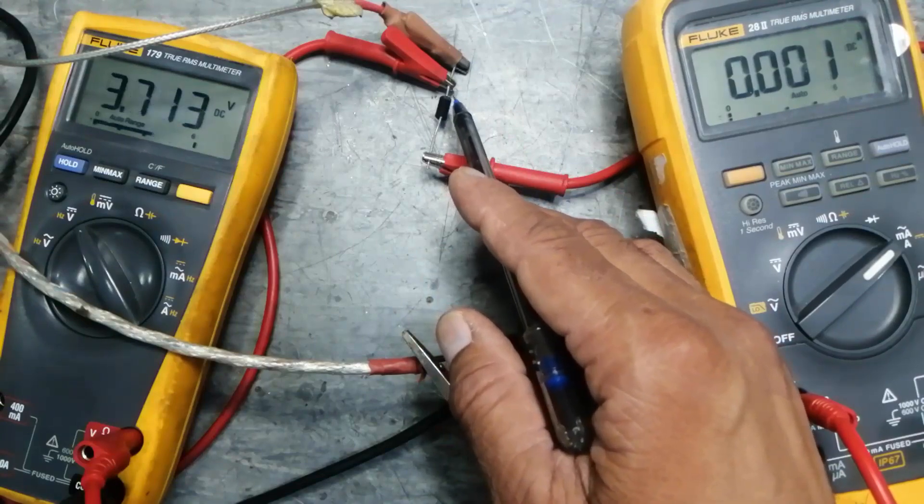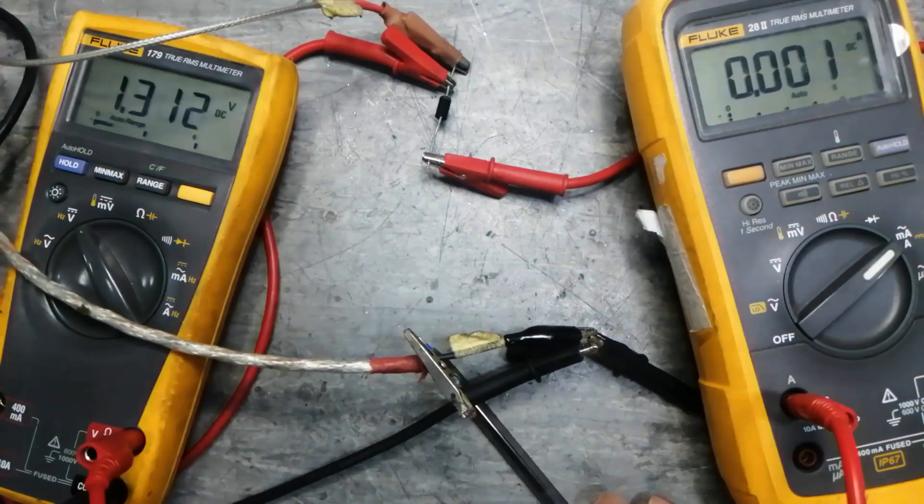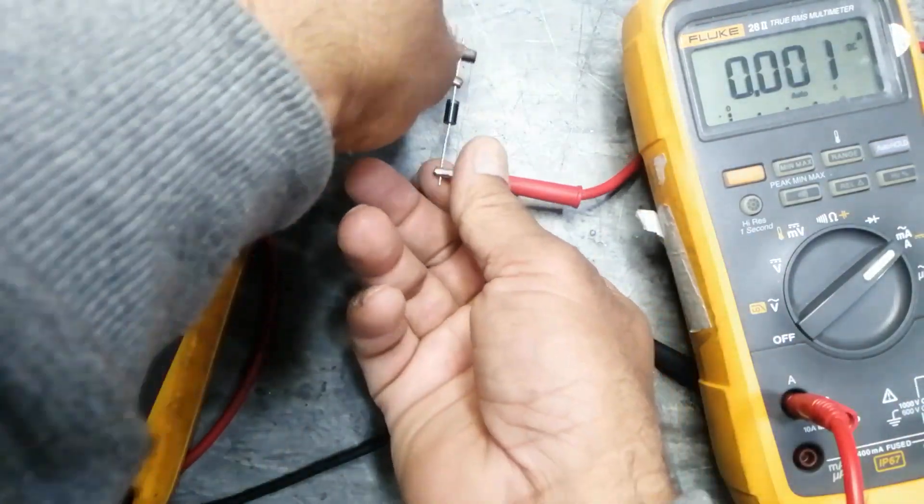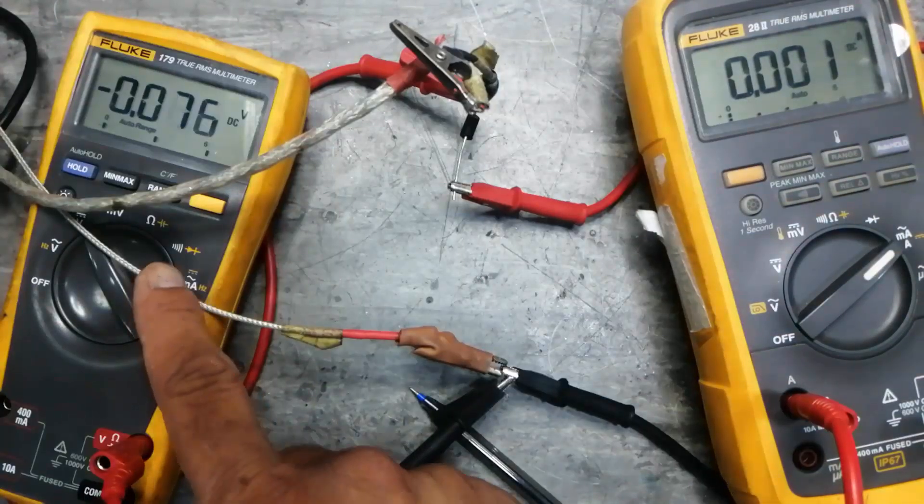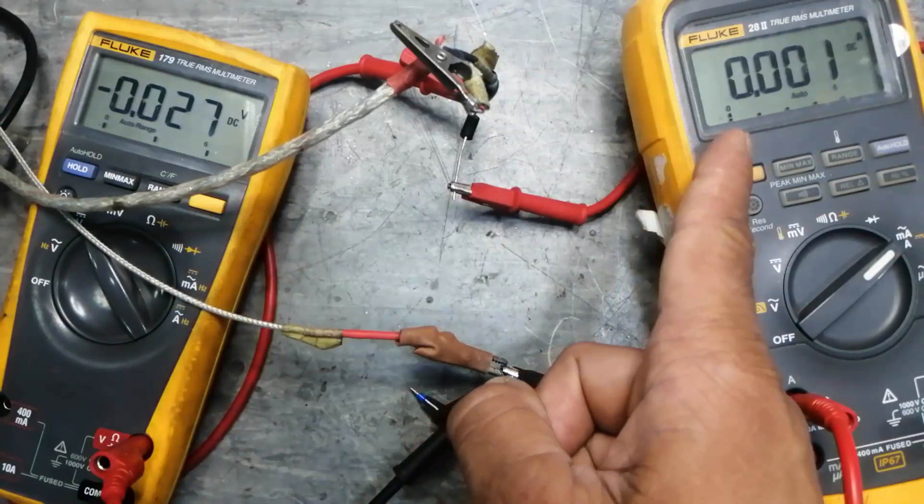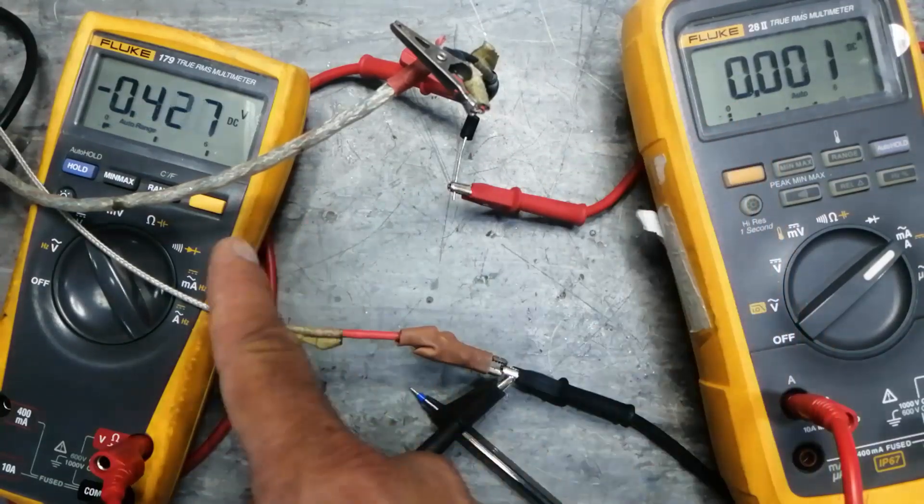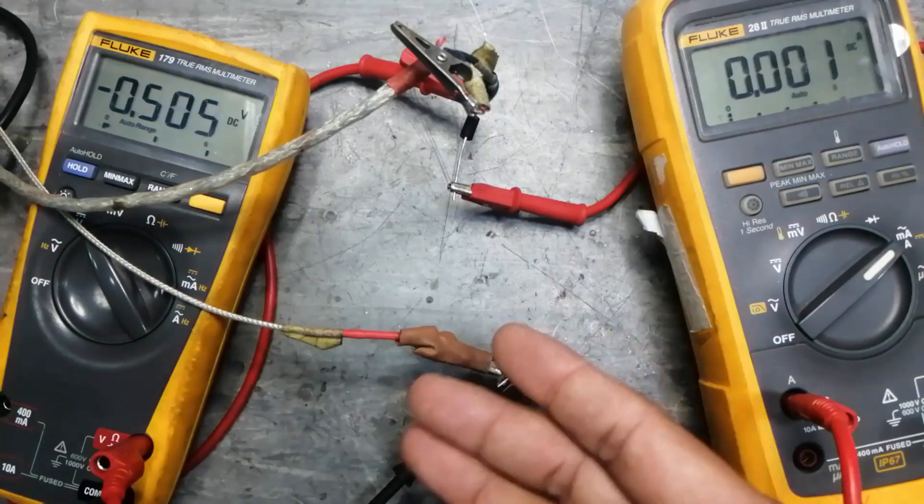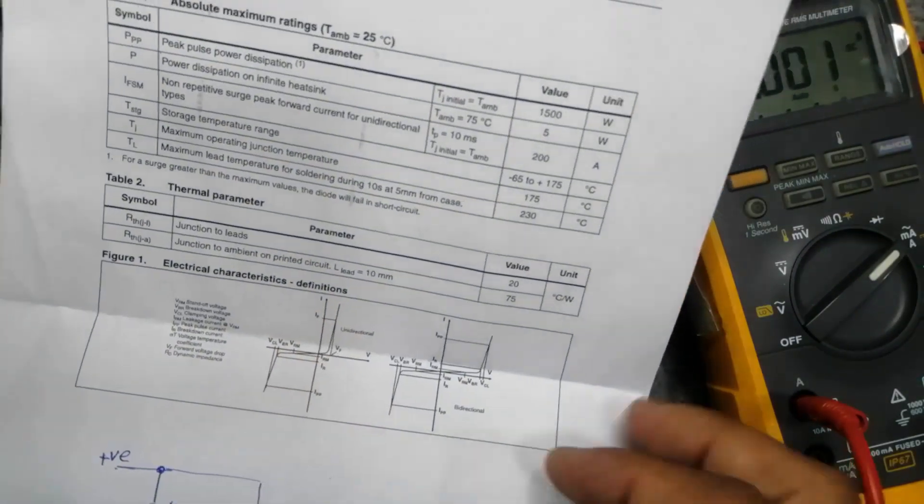If we connect in forward condition, it will immediately start to flow current after passing 0.7 volts. We can see it will conduct. So in forward condition it is working like a simple diode because it is unidirectional.